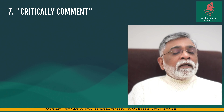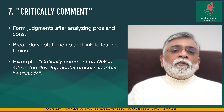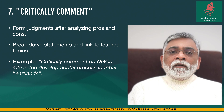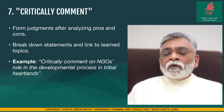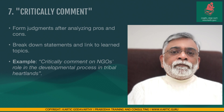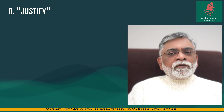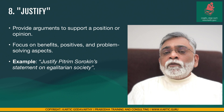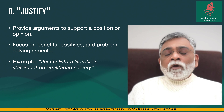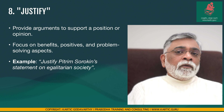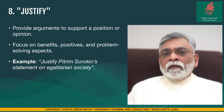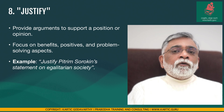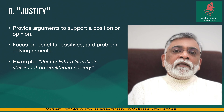Number seven: Critically comment. This involves forming a judgment after weighing the pros and cons, and may include analyzing statements from anthropologists or policies. For instance, 'critically comment on NGOs' role in the development process in tribal heartlands.' Number eight: Justify. This is rarely asked and requires providing arguments to support a position or opinion. For example, 'justify Pitrim Sorokin's statement on egalitarian society' demands using knowledge on social stratification to support the scholar's view. Sorokin stated that an egalitarian society with true equality of men is a myth that has never been realized in the history of mankind, and this question expects you to justify that statement on the universality of social stratification.